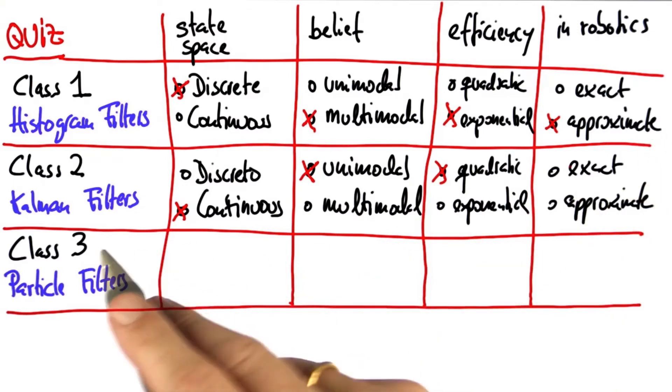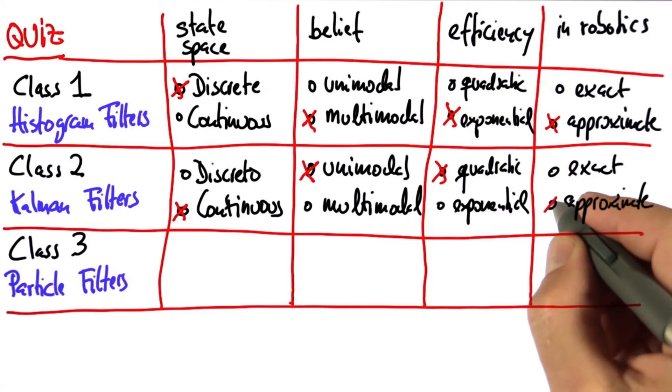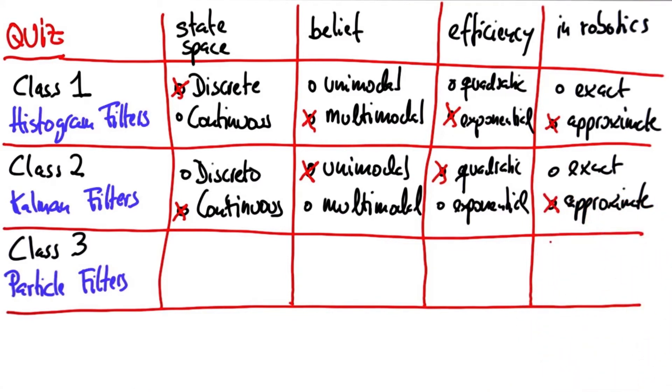It turns out Kalman filters are also approximate, and that's a much more subtle observation. It turns out Kalman filters only are exact for linear systems, whereas the world happens to be non-linear.